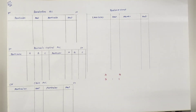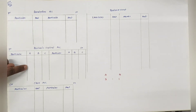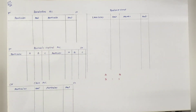यहाँ पर जो भी accounts चाहिए वो सारे के सारे बनाए हैं - revaluation, partners capital, cash and balance sheets. यहाँ पर लिखा है: The balance sheet of their firm as on 31st March 2016 was as under - balance sheet दिया है.